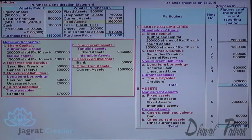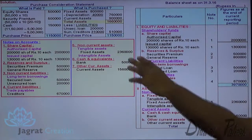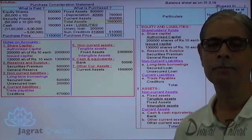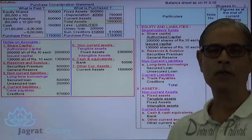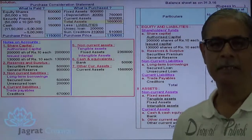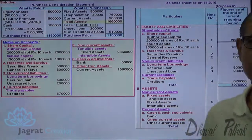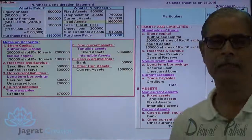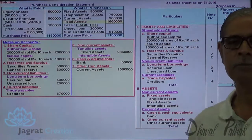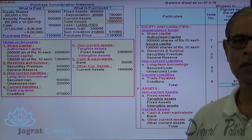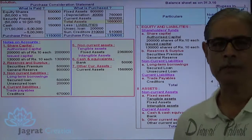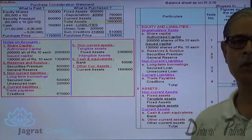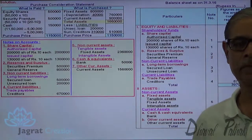This is how the notes on accounts and balance sheet are prepared. The important point of this sum is the consideration paid on the basis of intrinsic value — that's the key concept. I have tried to explain all these concepts; I hope you have followed. Thanks to all of you.